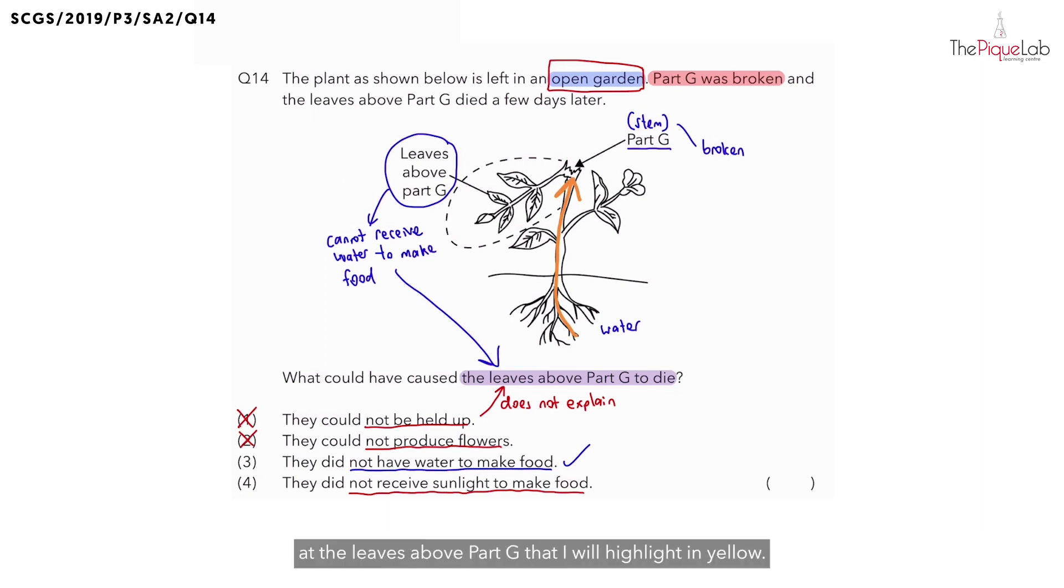Take a look at the leaves above part G that I will highlight in yellow. Even though the stem was broken, is the leaves above part G still able to receive sunlight? Definitely, sunlight is still able to reach the leaves. Which means, is option four correct? No, because the leaves could still receive sunlight, so we can cross out option four. And that means the correct answer has to be number three.